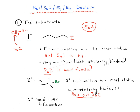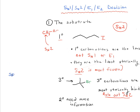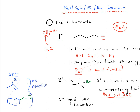Besides methyl, there's one other class to discuss: sp2 hybridized carbons. For example, if you have an alkene attached to a bromine, or a phenyl group attached to a leaving group like OTs — in these cases, there is no reaction. We can't have an SN2 occur on an sp2 hybridized carbon, and for our purposes we also can't have an E2. So if you see a leaving group attached to an alkene or aryl group, the answer is no reaction.